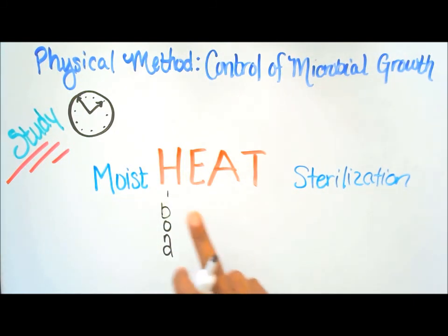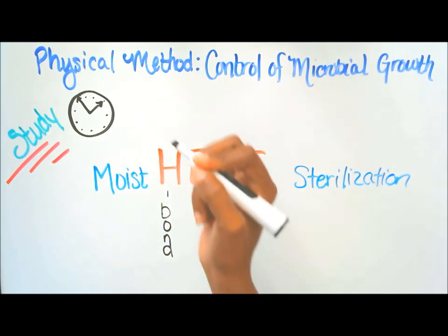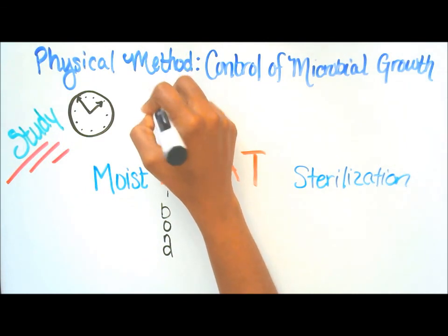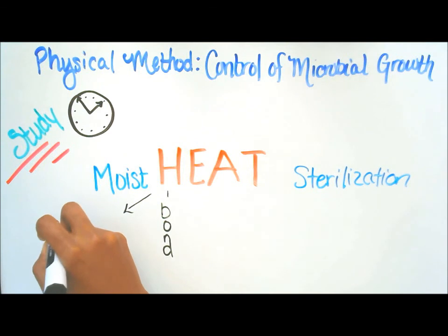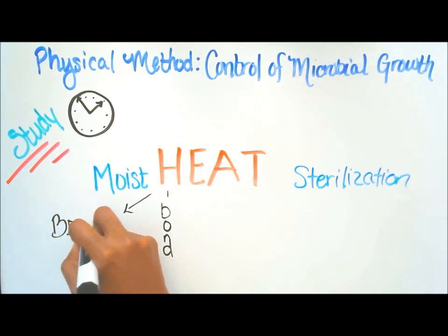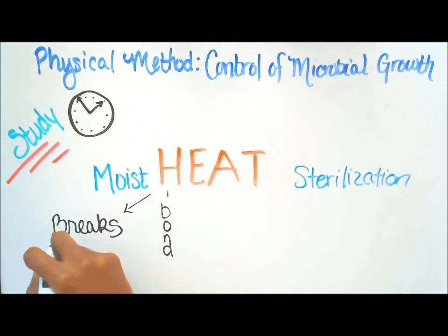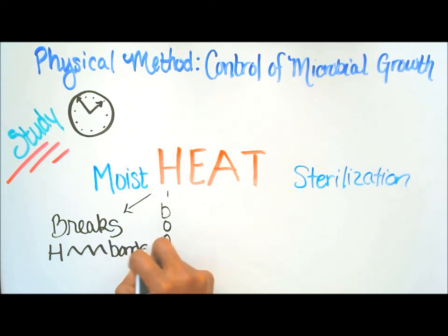Heat sterilization, moist heat sterilization breaks the hydrogen bonds. So we're going to put break. We have moist heat sterilization, we're using the H in heat. H bonds, hydrogen bonds. Hydrogen bonds are broken in moist heat sterilization. So that's how you can remember the first point.